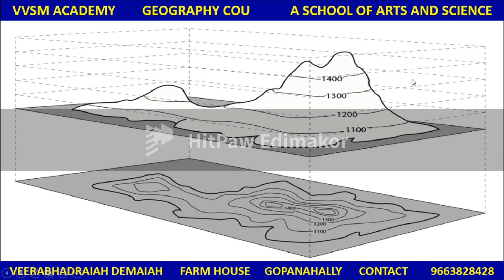This is a 3D structure and this is a 2D structure. These are very important things. How to draw contour lines is very important in geographical features.